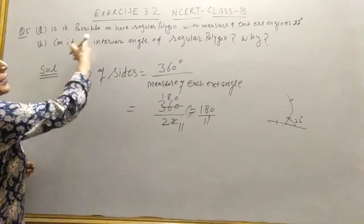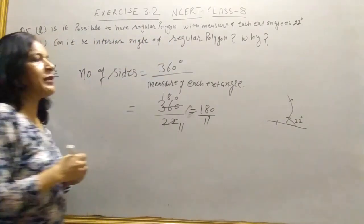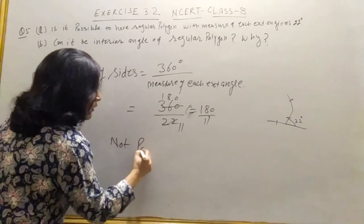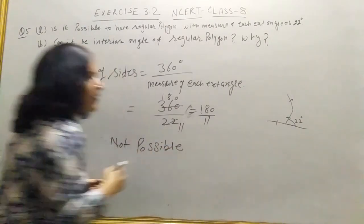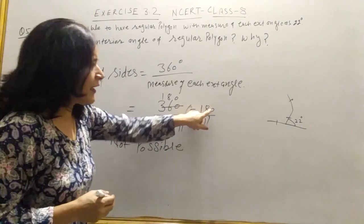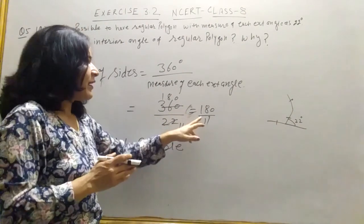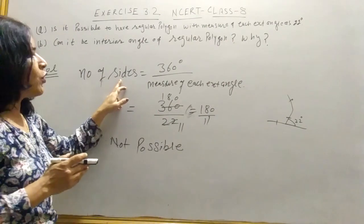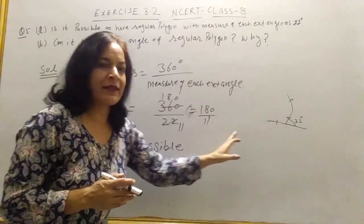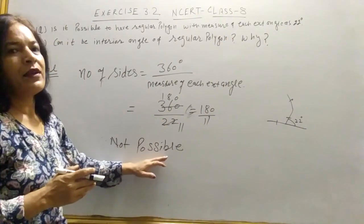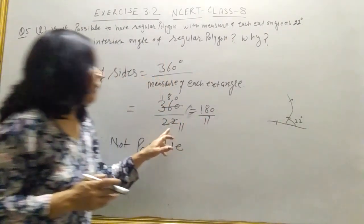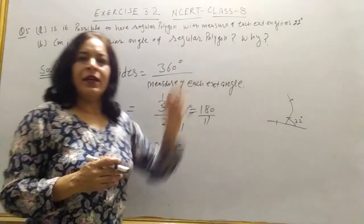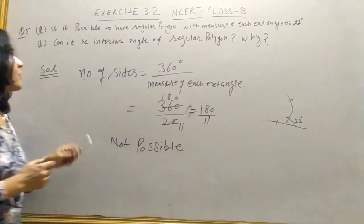So it is not possible to have a regular polygon with measure of angle 22 degrees. Not possible because when we divide 180 by 11, we get the answer in decimal points, and this is the number of sides. Number of sides cannot be in decimal points, so it is not possible. If the exterior angle is not a factor of 360, then that polygon is not possible.